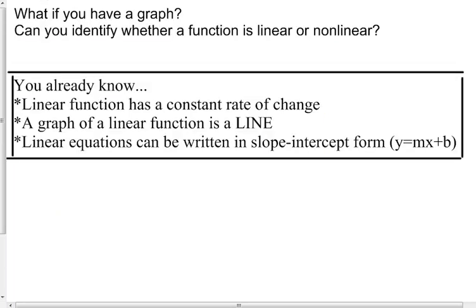What if you have a graph? Can you identify whether the function is linear or nonlinear? Linear functions have a constant rate of change — slope — and the graph of a linear function is a straight line with that constant rate of change. Linear equations can be written in slope-intercept form y equals mx plus b, which shows that constant rate of change.